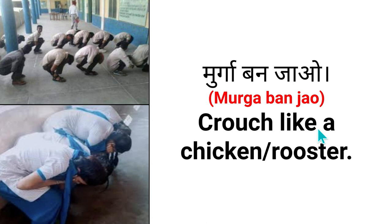If you need to tell someone 'murga banjao' — as a punishment — you would say: crouch like a chicken, or crouch like a rooster.